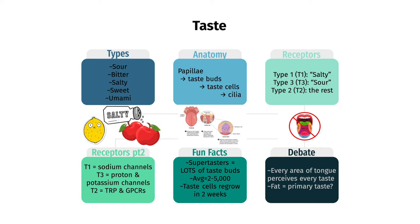Some people are super tasters, who have an abnormally large number of taste buds, above the average of about 2,000 to 5,000. Our taste cells regenerate every two weeks once damaged. Every area of the tongue can perceive every type of taste, and some even argue that fat is another primary taste.